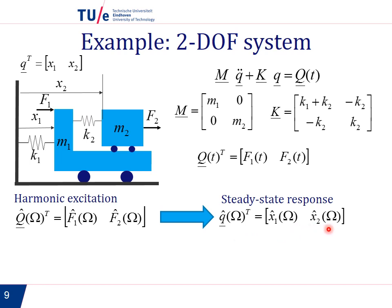So this x hat and x1 hat, x2 hat are the complex amplitudes of the response. And this omega between brackets is to stress the fact that these quantities are frequency dependent.